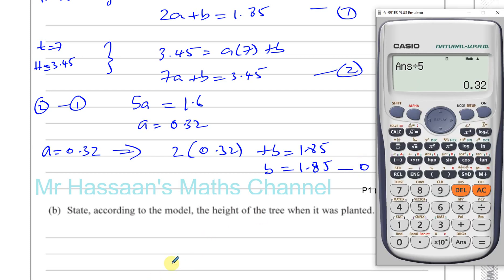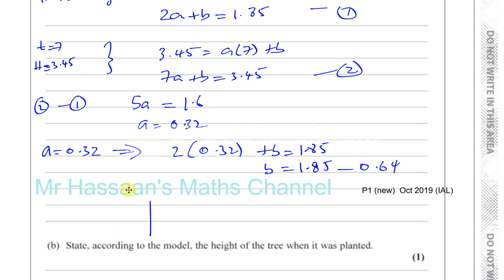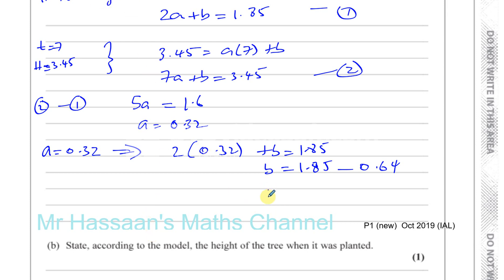So b = 1.85 minus 0.64. We have 1.85 minus that, which gives 1.21. So b = 1.21. There's your answer for a and b.